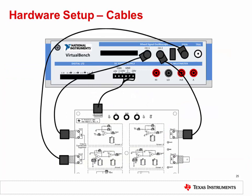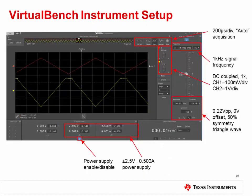The cable connections to the VirtualBench are exactly the same as in Experiment 1 — no changes are necessary. The VirtualBench instrument setup is very similar to Experiment 1; make only the following changes. Set the vertical scale of channel 1 to 100 millivolts per division. Keep the vertical scale of channel 2 at 1 volt per division. Set the function generator to a 0.22 volts peak-to-peak, 0 volts offset, 50% symmetry triangle wave at 1 kilohertz. Set the time scale to 200 microseconds per division. Turn on the DC power supply and function generator.